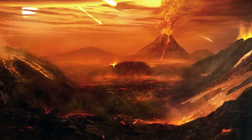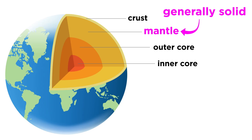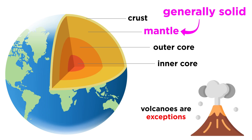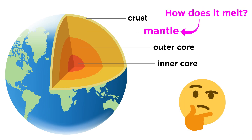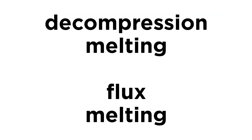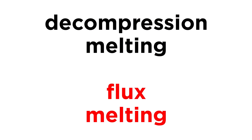You may now be wondering why lava isn't erupting everywhere on earth. It turns out that under normal conditions, the mantle is perfectly happy as a solid and cannot melt, and volcanoes are an exception to the rule. In fact, there are two ways to melt the mantle in large quantities: decompression melting and flux melting.